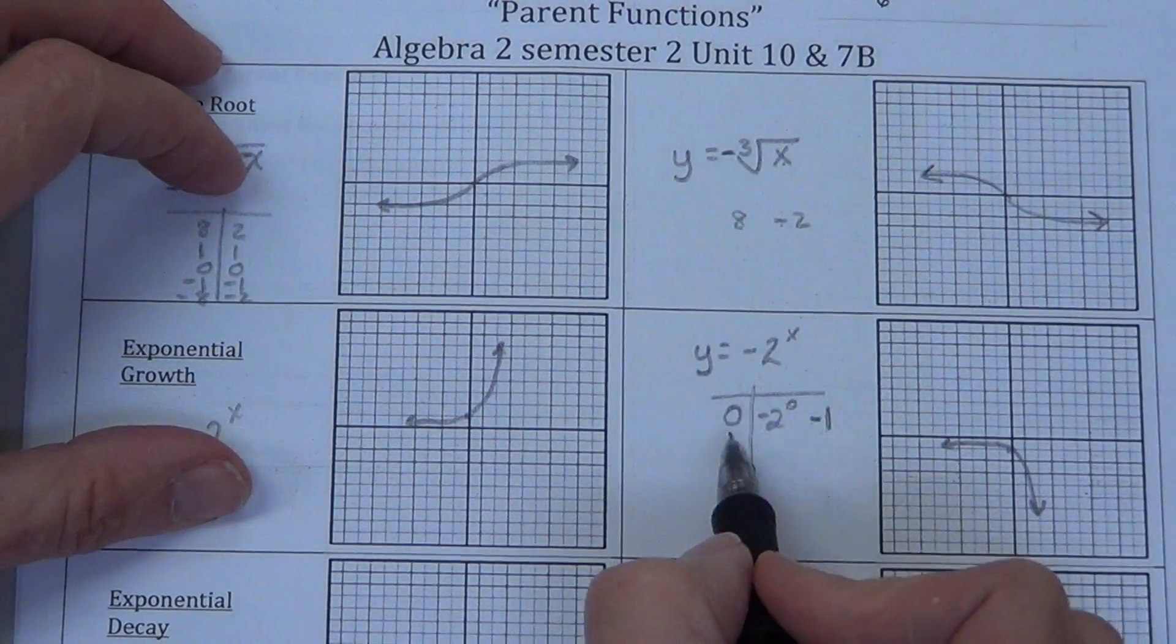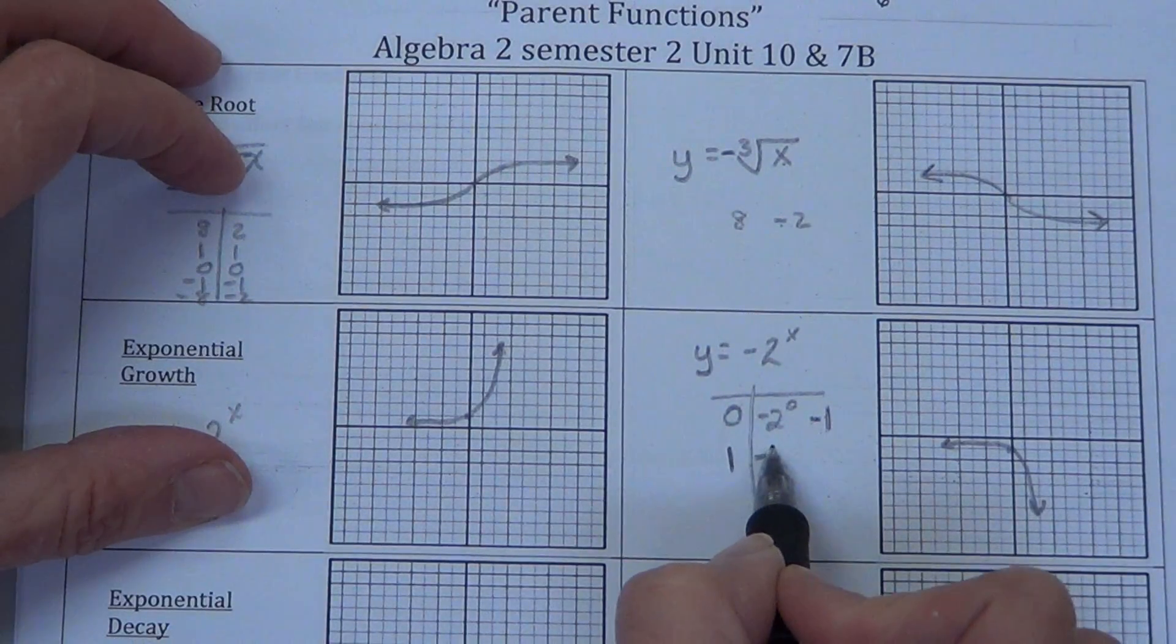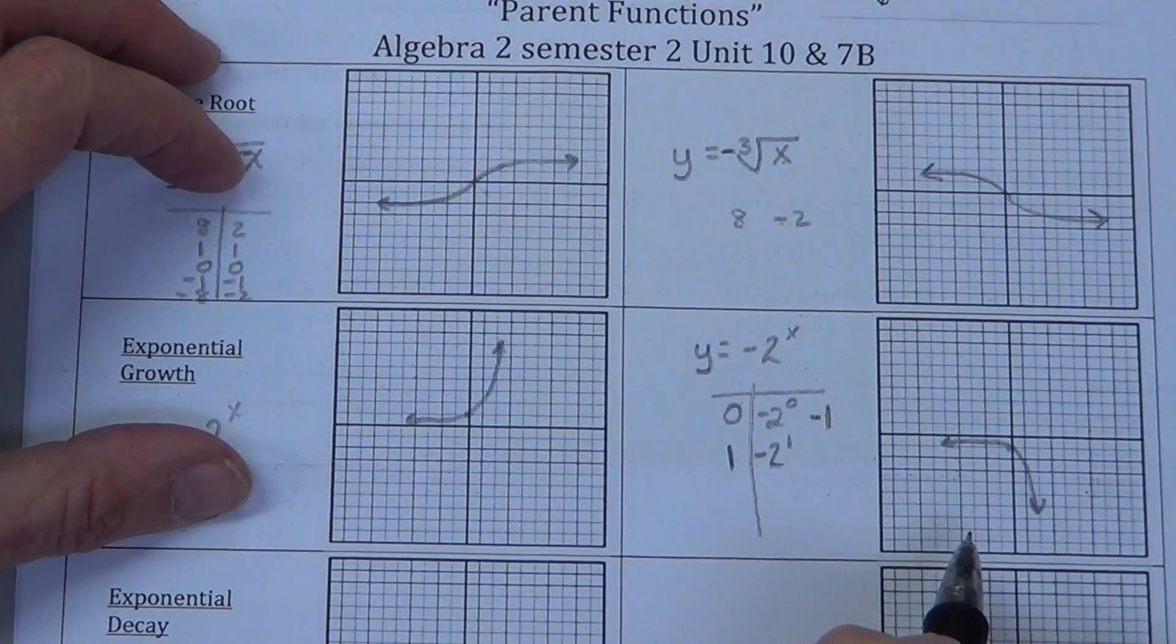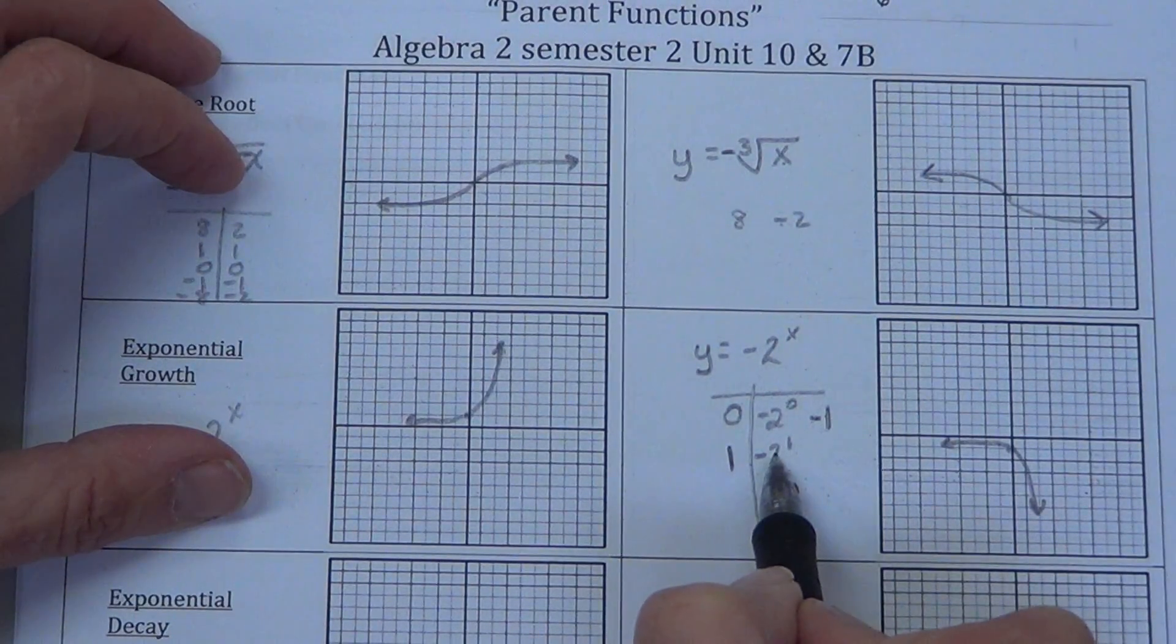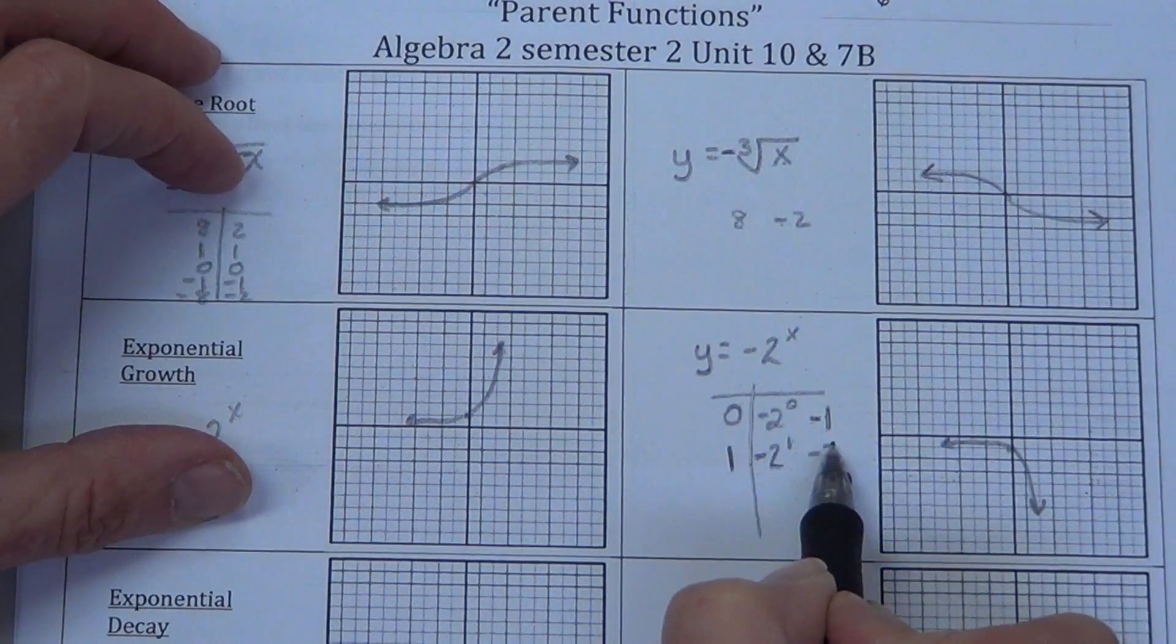We want to check another one. Say we have negative 2 to the 1st. Well, we have 2 raised to the 1st power, that's 2, times negative is negative 2.